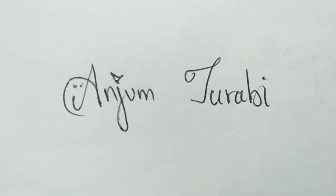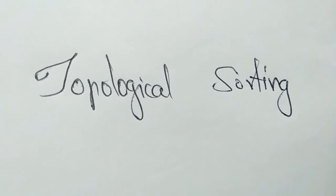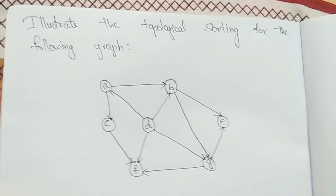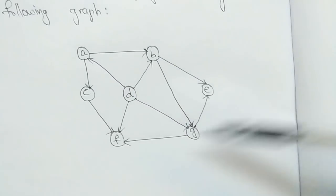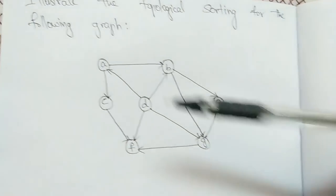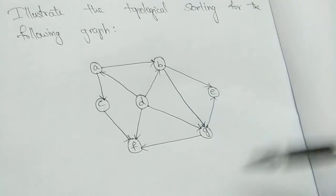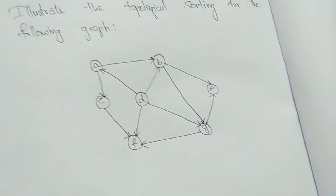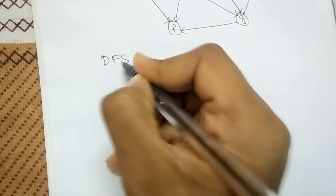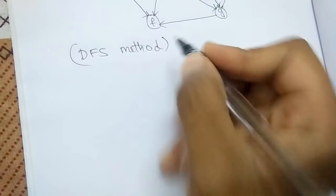Hey guys, this is Anjum Tarabi and today I'm going to teach you topological sorting using a directed graph. In exams they might ask you to illustrate the topological sorting for a given graph. For topological sorting, only directed graphs are used. I know two ways of topologically sorting the vertices: one is the DFS method (depth first search) and the other is the source removal method. I'm going to teach the DFS method for now, and in my next video I'll teach the source removal method.